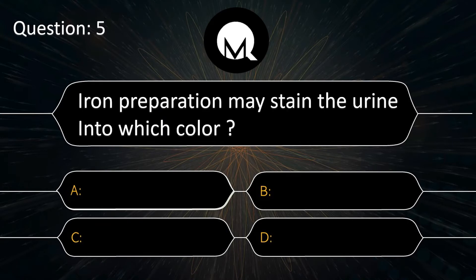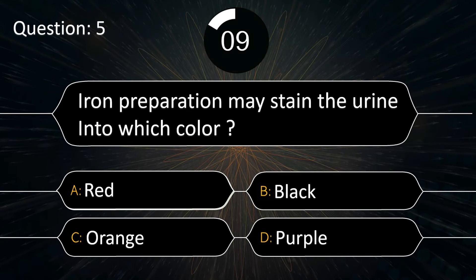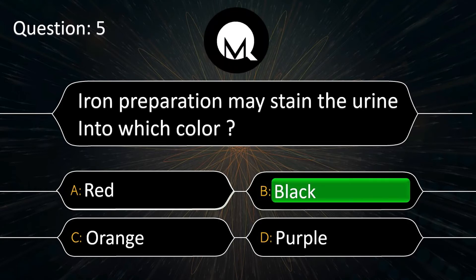Iron preparation may stain the urine into which colour? Red, black, orange, or purple? The answer is black.